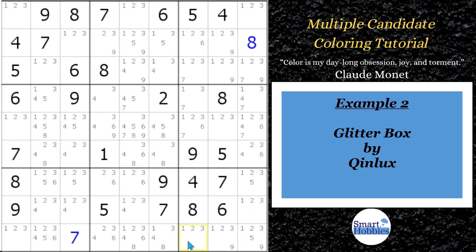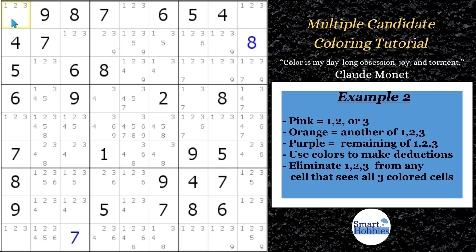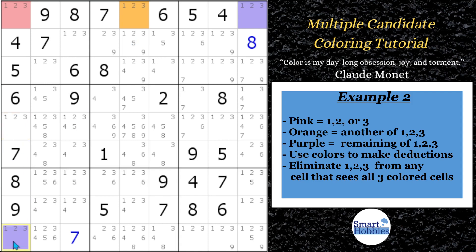So we want to start assigning colors. Let's assign pink to this cell, orange to this cell, and purple to this cell. We don't know which is the one, two, and three, but they can be represented by three different colors. Now we can make further deductions. You might ask: is this cell orange or purple? The answer is it can't be purple, because if it were purple, whatever that is — one, two, or three — it couldn't be in any of these three cells, and it couldn't be in any of these three cells either because this purple looks down on them. So this can't be purple — it has to be orange, and then this would have to be purple. That's a key deduction. Obviously it couldn't be pink because the pink one is already in column one.